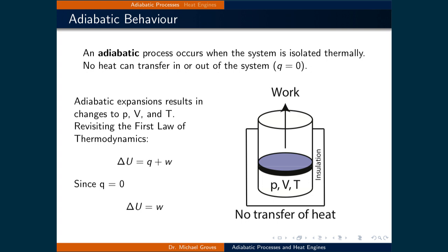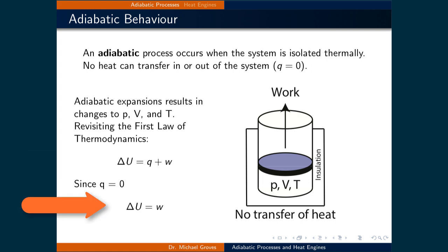An adiabatic process occurs when the system is isolated thermally. This means that no heat can transfer in or out of the system. In the context of the first law of thermodynamics, the heat or Q is equal to zero. Therefore, when applying the first law of thermodynamics, the change in internal energy is equal to the work.